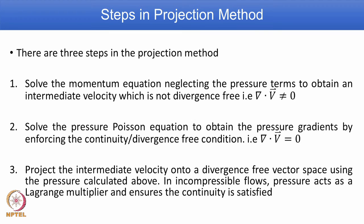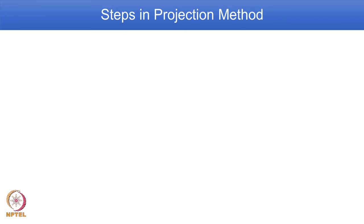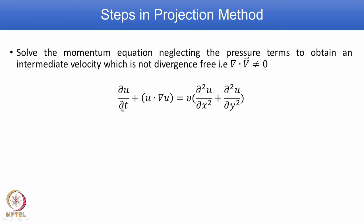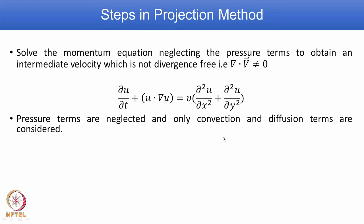Once we solve the momentum equation neglecting the pressure terms, we get the equation as shown. We have the time derivative term as the first term on the left-hand side and the convection term as the second term. On the right-hand side we have only the diffusion term — no other source term is considered. Pressure terms are neglected; only convection and diffusion terms are considered.